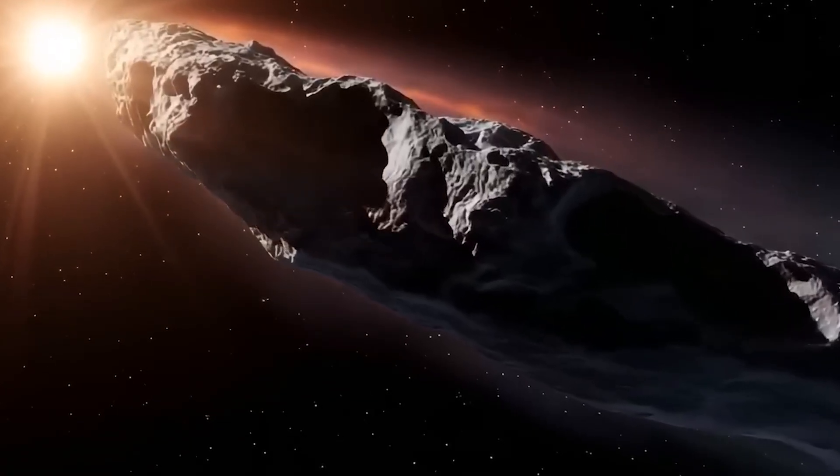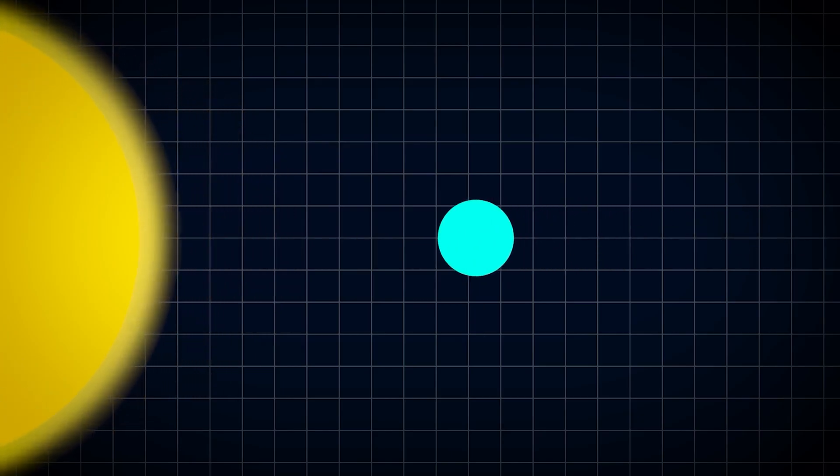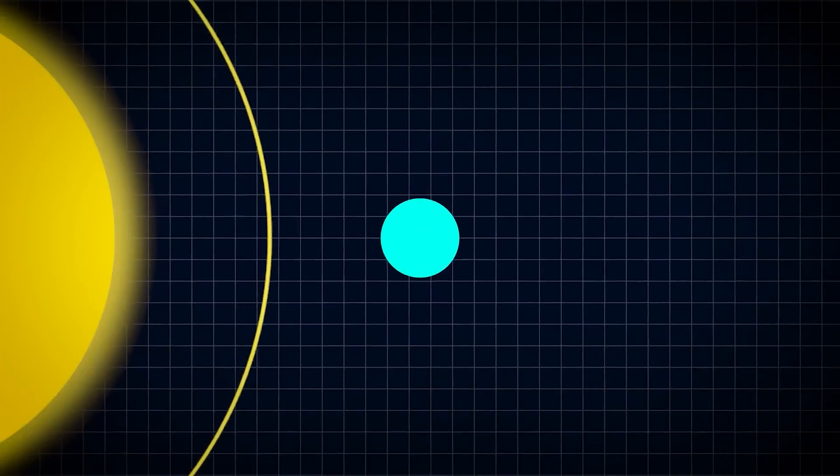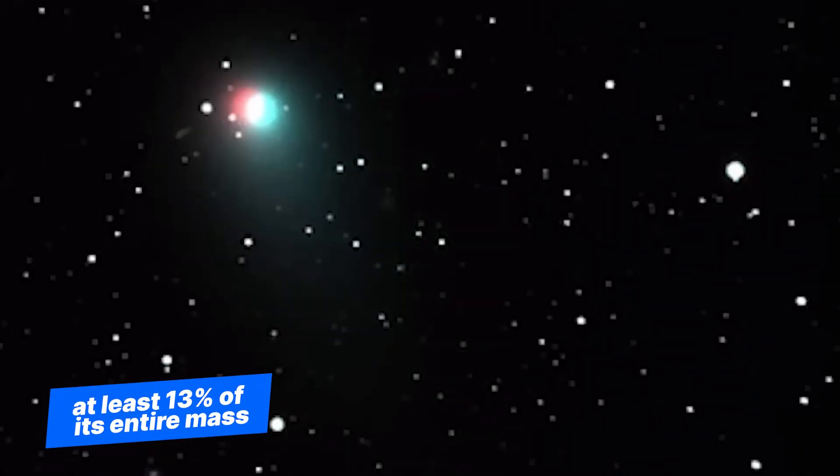Near the sun, 3I Atlas accelerated in a way that gravity can't explain. For a normal comet, that happens when ice vaporizes and pushes it like a rocket. But here's the thing. For this object to accelerate the way it did, it would need to blow off at least 13% of its entire mass.